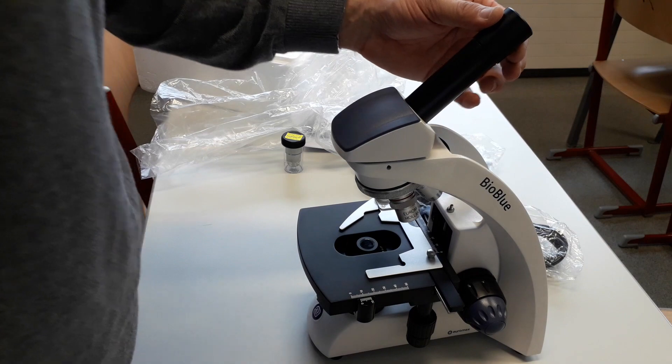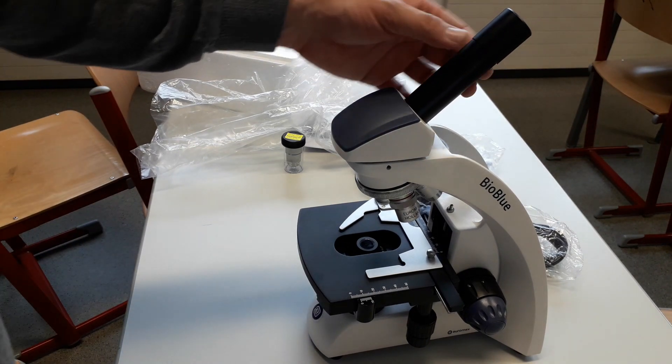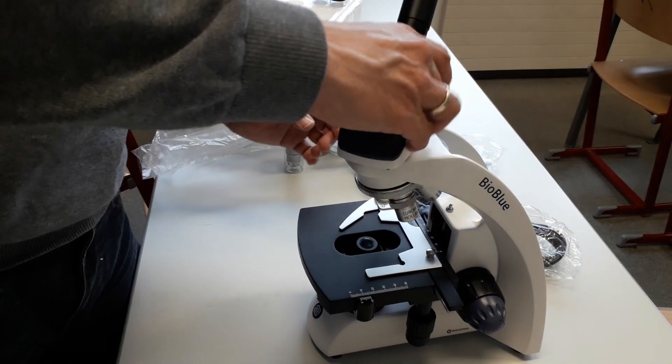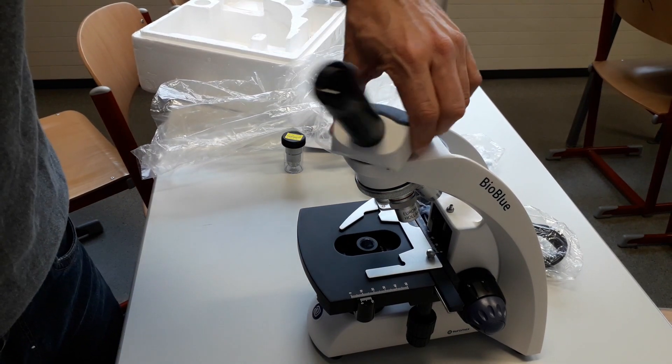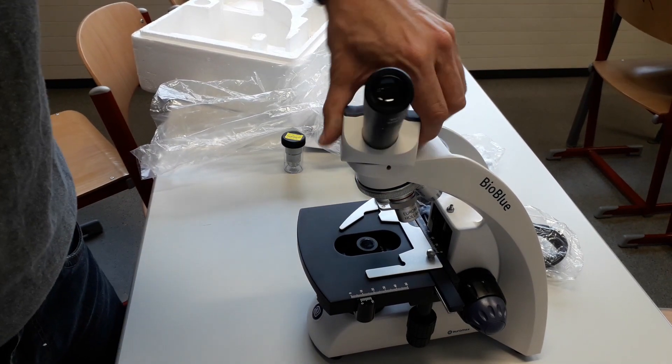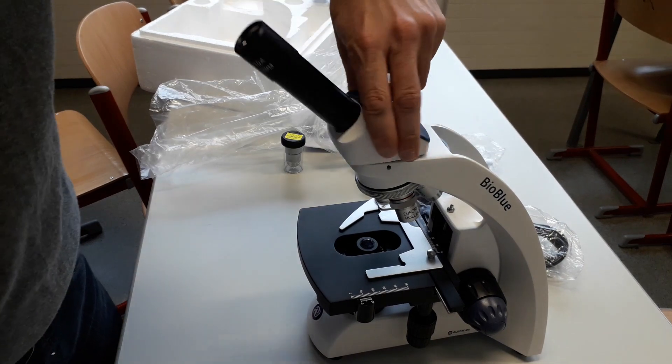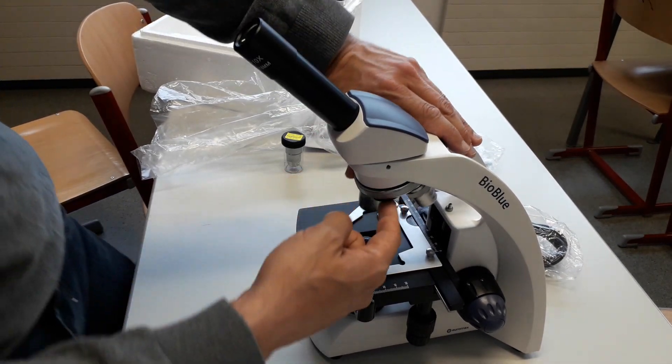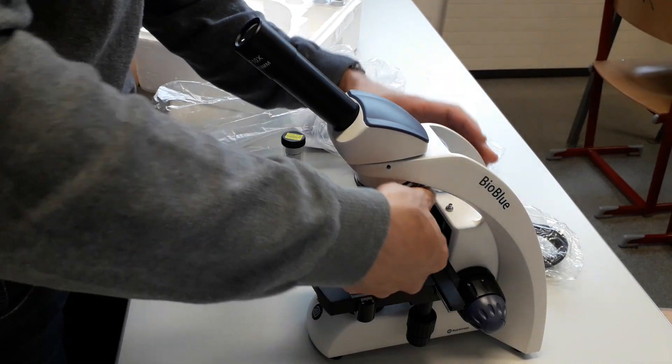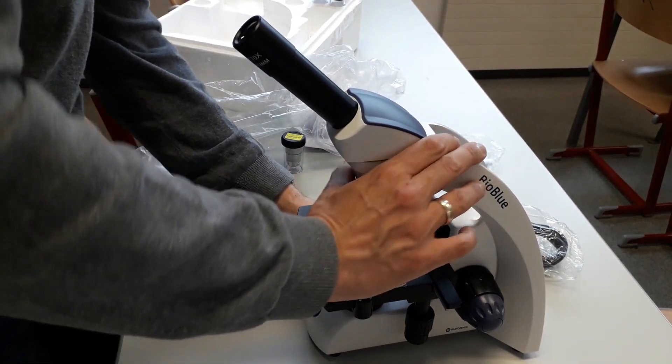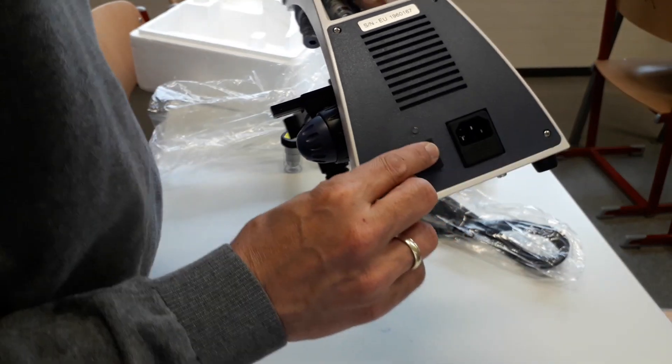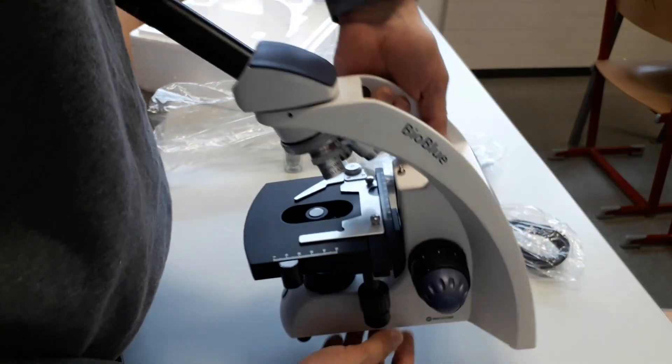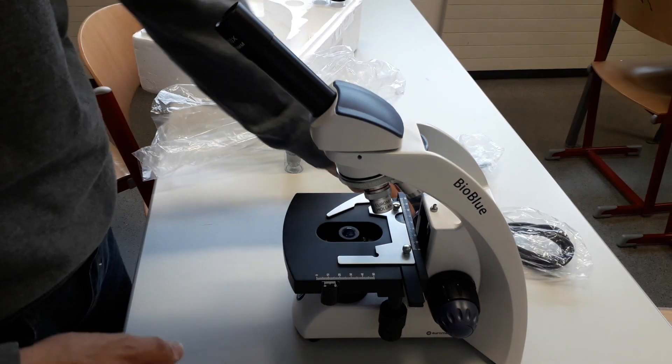This one here can be turned. There is a little bit of resistance, but not too much. Very nice. It goes very smoothly. There is the possibility to attach a fourth objective. I like it. Where's the main switch? The main switch is here in the back. So that's basically the first one.